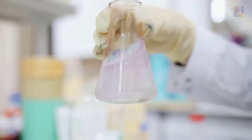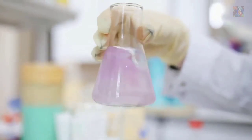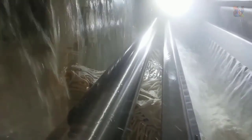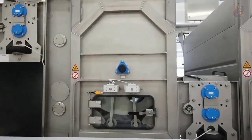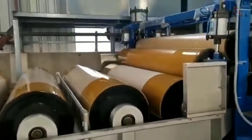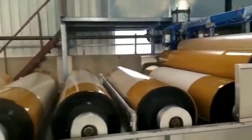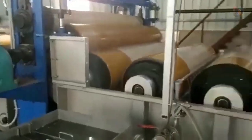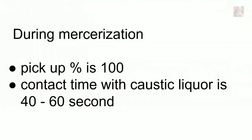Mercerization is performed using caustic soda. The concentration of caustic soda in scouring is very low, about 5 to 10 percent, while the concentration in mercerization may be up to 20 to 25 percent. During mercerization, the pickup percentage will be 100, and the fabric is treated with caustic soda for about 40 to 60 seconds.